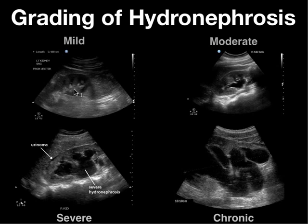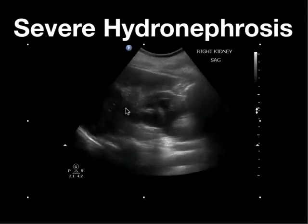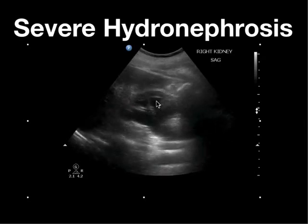Here are the various grading schemes for hydronephrosis. With very mild hydronephrosis, there's some dilatation of the pelvis but it does not extend into the minor calyces. With moderate hydronephrosis, there's more fullness in the renal pelvis and it starts to branch into the minor calyces. In severe hydronephrosis, you see significant dilatation of the renal pelvis and dilatation of the minor calyces. In chronic severe hydronephrosis, there's marked dilatation of the pelvis, dilatation of the minor calyces, and thinning of the renal parenchyma to less than 15 millimeters.